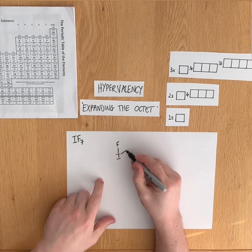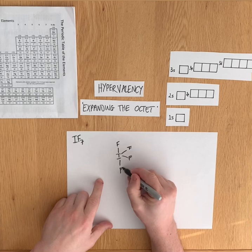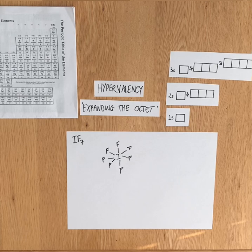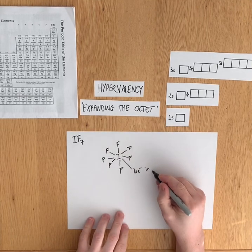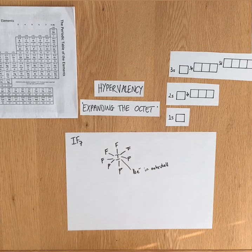It will share each one of those seven electrons with a fluorine to end up with 14 electrons in its outer shell. It only does this with fluorine; it can't do it with anything else.